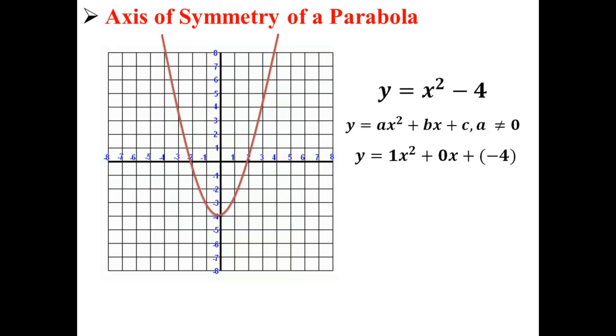So we're simply going to rewrite our equation y equals x squared minus 4 in standard form, which would be y equals 1x squared plus 0x plus negative 4.